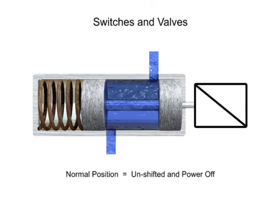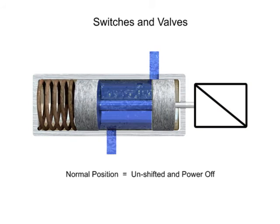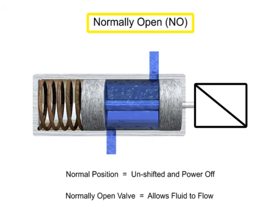The terms normally opened and normally closed are used to describe the condition of a valve when it is in the normal position. For this valve, the normal position allows unrestricted fluid flow through the open ports. Therefore, this valve is a normally open valve.